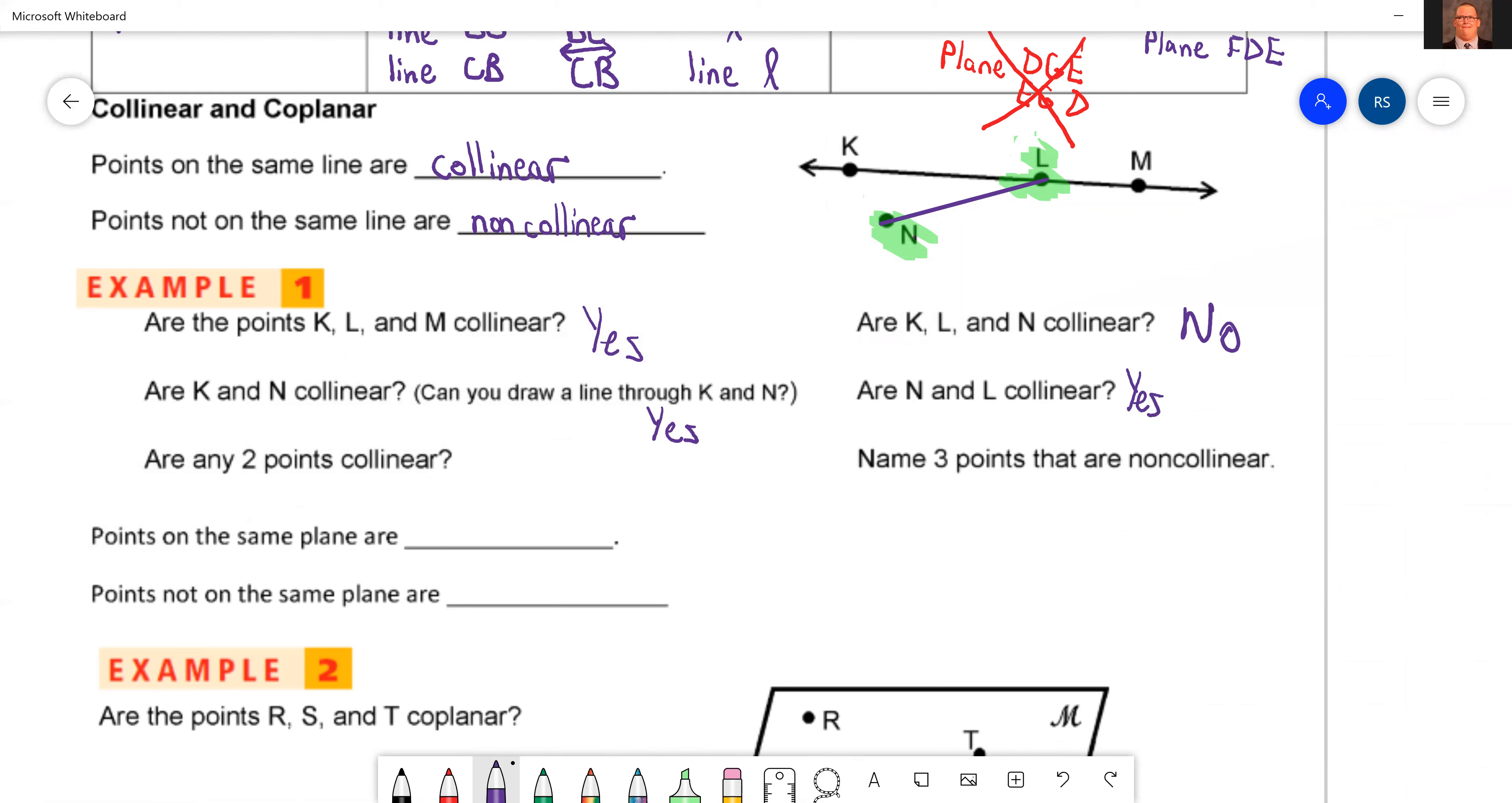And the reason we ask about K and N and then N and L is because there's just a fact of the matter. Any two points will always be collinear. So are any two points collinear? Yes. If you just have two points, draw a line between them and they're collinear.